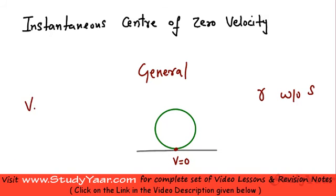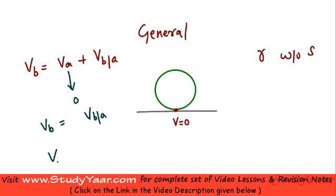We know VB is equal to VA plus VB with respect to A. If I say that VA is zero, if this is zero then my VB is equal to VB with respect to A. Or in other words my VB is going to be equal to omega cross RB with respect to A.